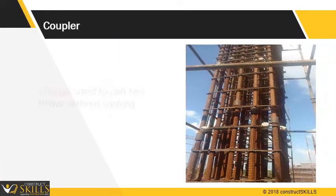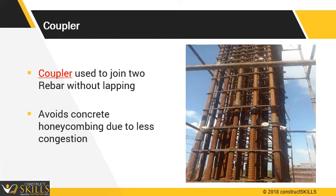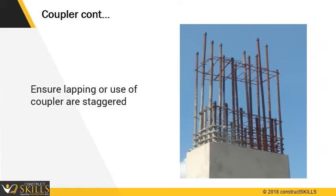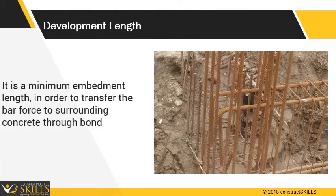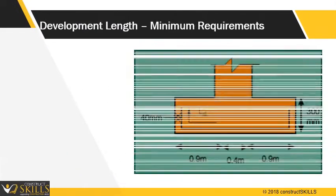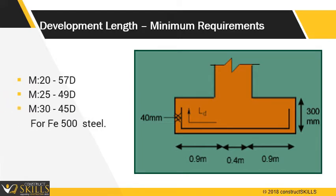Couplers are used to join two rebars without providing lapping. It avoids honeycombing. Ensure lapping or use of coupler are staggered. Development length is a minimum embedment length in order to transfer the bar force to the surrounding concrete through bond. The formula to calculate development length is 57d for M20, 49d for M25, and 45d for M30, shown as development length ld of a footing.